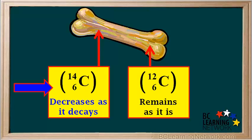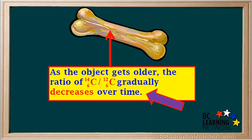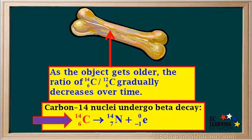However, carbon-14 is a radioactive isotope, so the amount of carbon-14 in the bone slowly decreases as this carbon-14 decays. So as the object gets older, carbon-14 decreases and carbon-12 stays the same. The ratio of carbon-14 to carbon-12 gradually decreases over time. Carbon-14 nuclei undergo beta decay when they are converted to stable nitrogen-14.